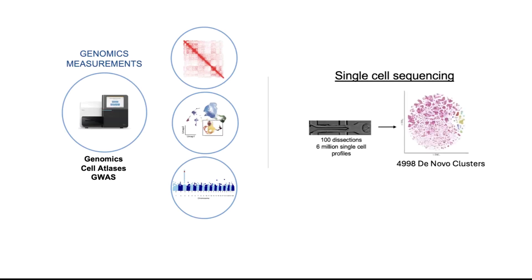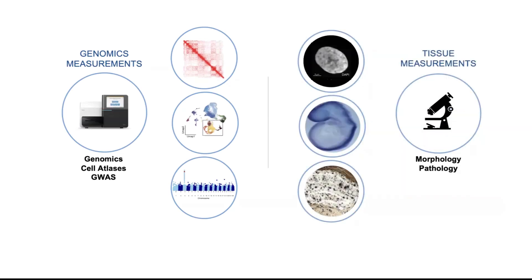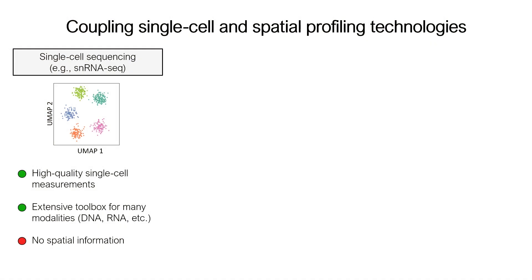But much of this data is collected in dissociated single cells where you don't have spatial context. Cells are not naturally living in dissociated series — they are interacting and composed of tissues. Our traditional tools to study tissue function have been through microscopy, where we can measure morphology, pathology, or staining. But the challenge is that these represent two very distinct data modalities and two different ways of collecting data.